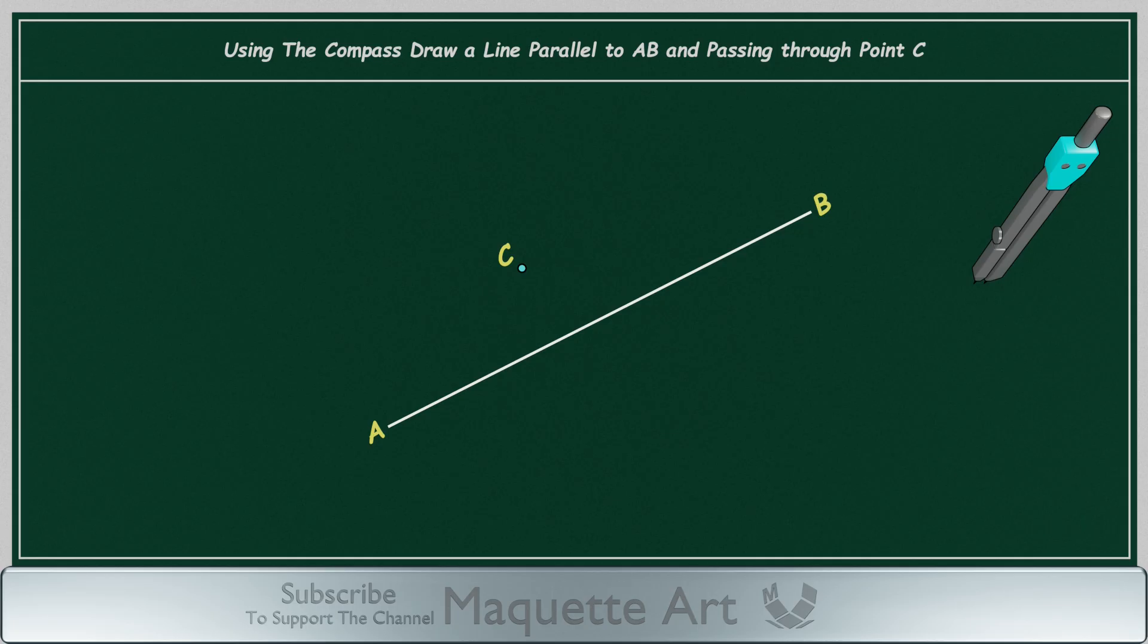The first step is to add a point on line AB. You can position the point anywhere on line AB, but avoid adding it directly below point C.